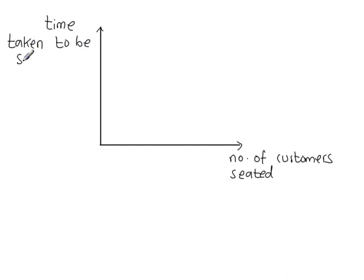Let's assume that on the horizontal axis here you have the number of customers seated in a restaurant. And on the vertical axis here we have the time taken to be served.